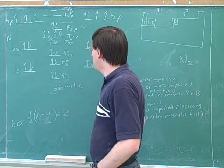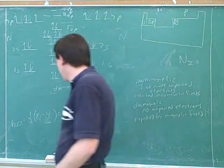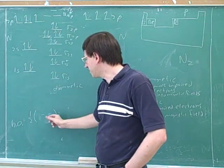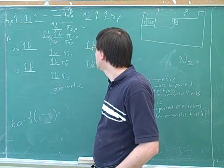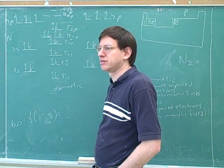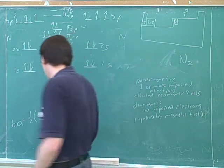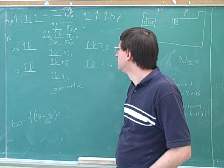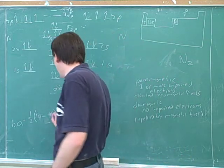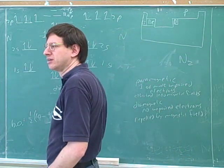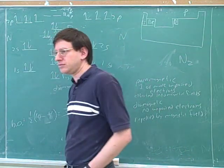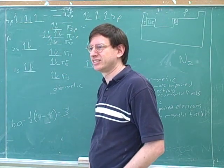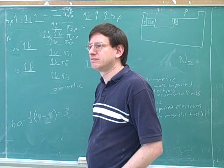All right, and now let's calculate the bond order. What number should I put in here? Ten. And how about here? Four. So our bond order would be? Three. Does that make sense? That makes sense because nitrogen and nitrogen is a triple bond.